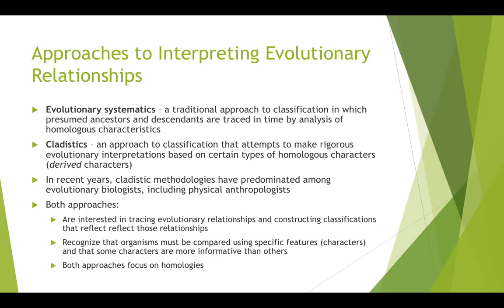Cladistics is an approach that attempts to make rigorous evolutionary interpretations based on certain kinds of homologous characters. It recognizes that not all homologies are equal — some are more useful in determining relatedness and groupings than others. We focus on what we call derived characteristics. In a cladogram, the length of the branches doesn't convey evolutionary time scale the way phylogenetic trees do.